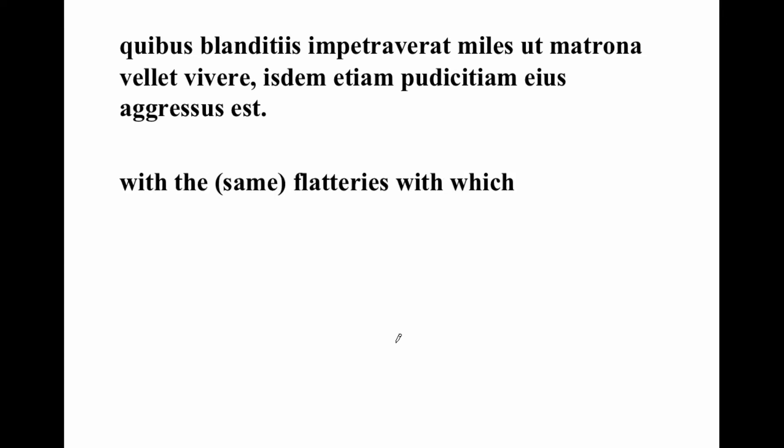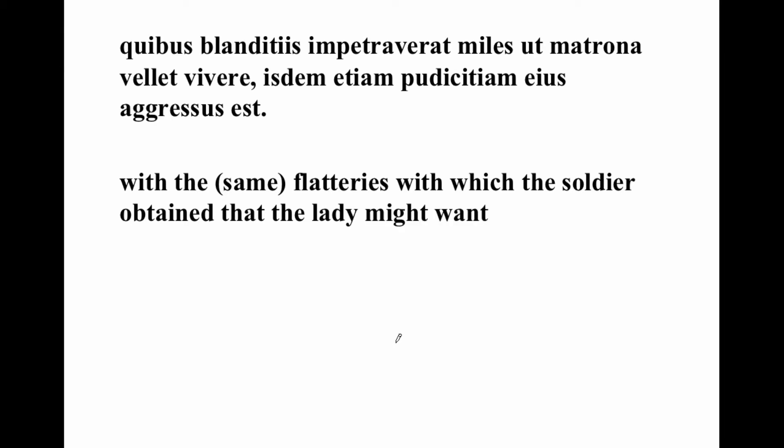So quibus blanditiis literally is 'by which flatteries,' but when you have a relative like this at the very beginning of the sentence, your best rendering is something like: 'With the same flatteries with which the soldier obtained...' — and he obtained that something happened — 'with the same flatteries with which the soldier obtained ut matrona,' that the lady might want.